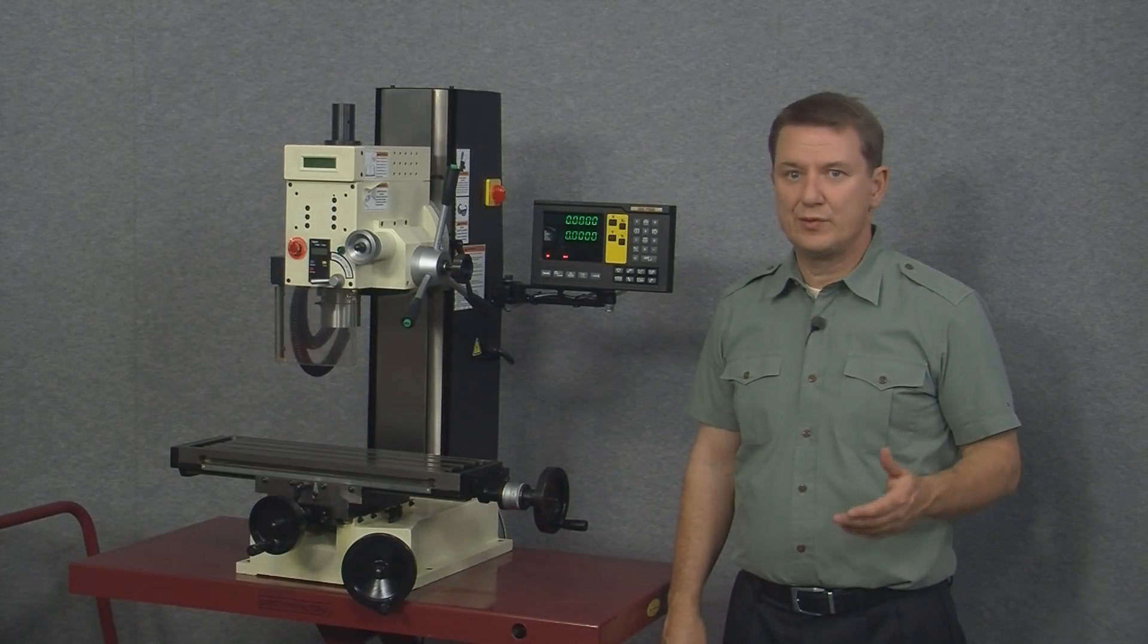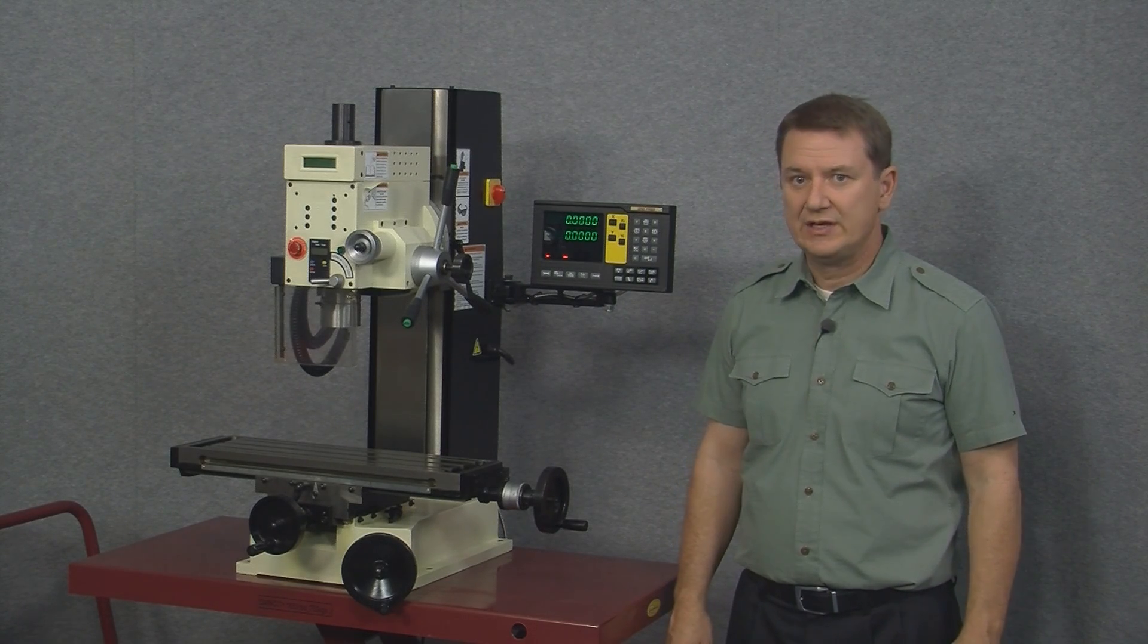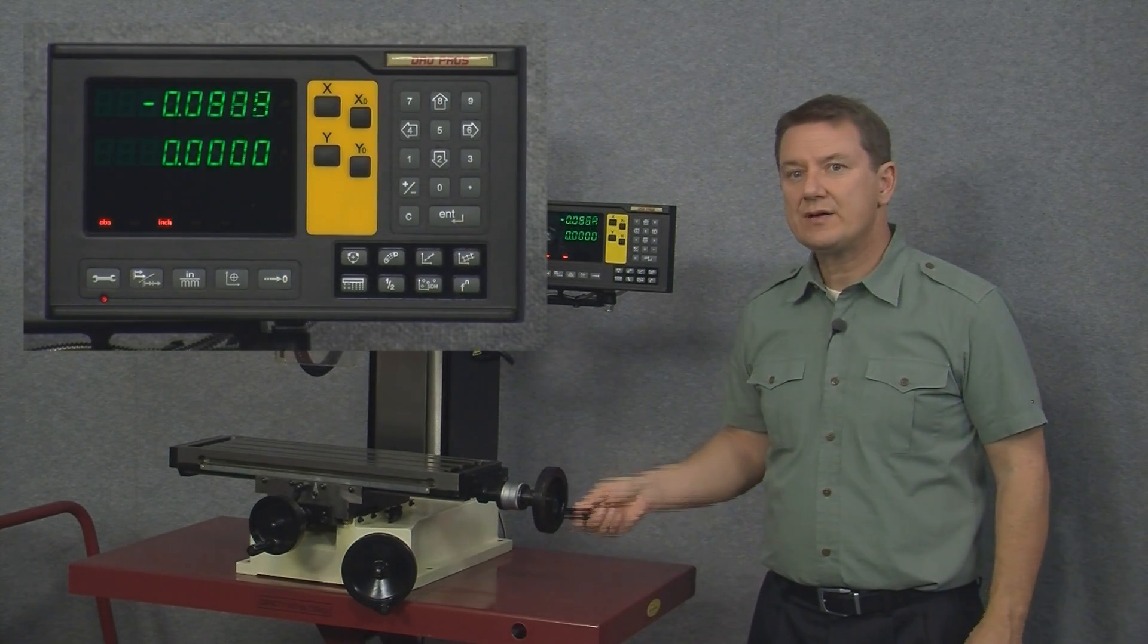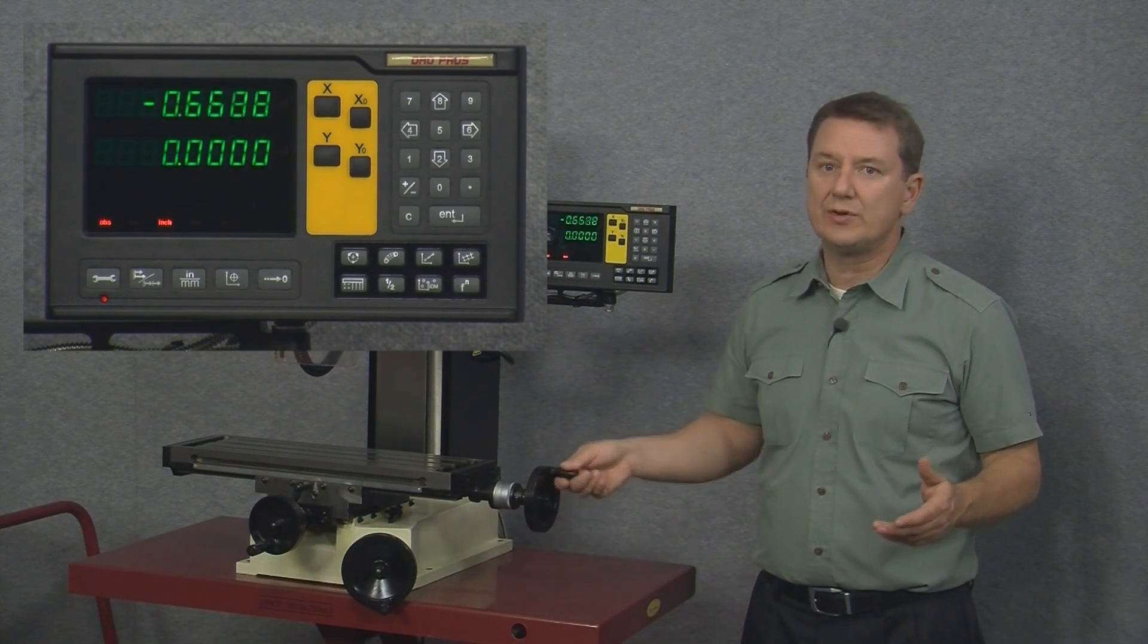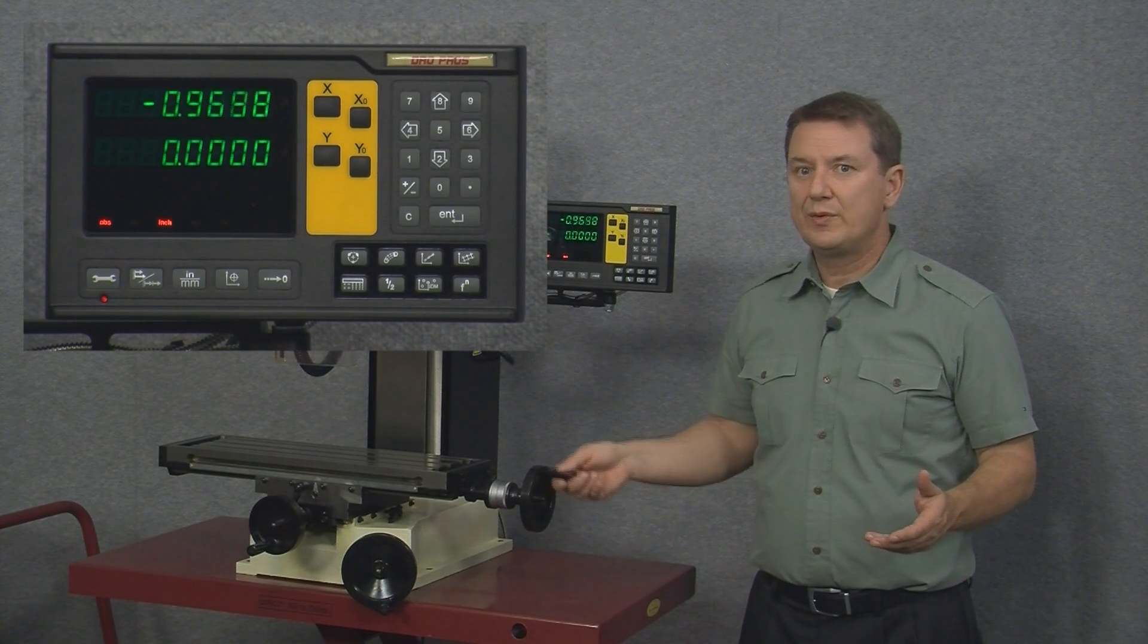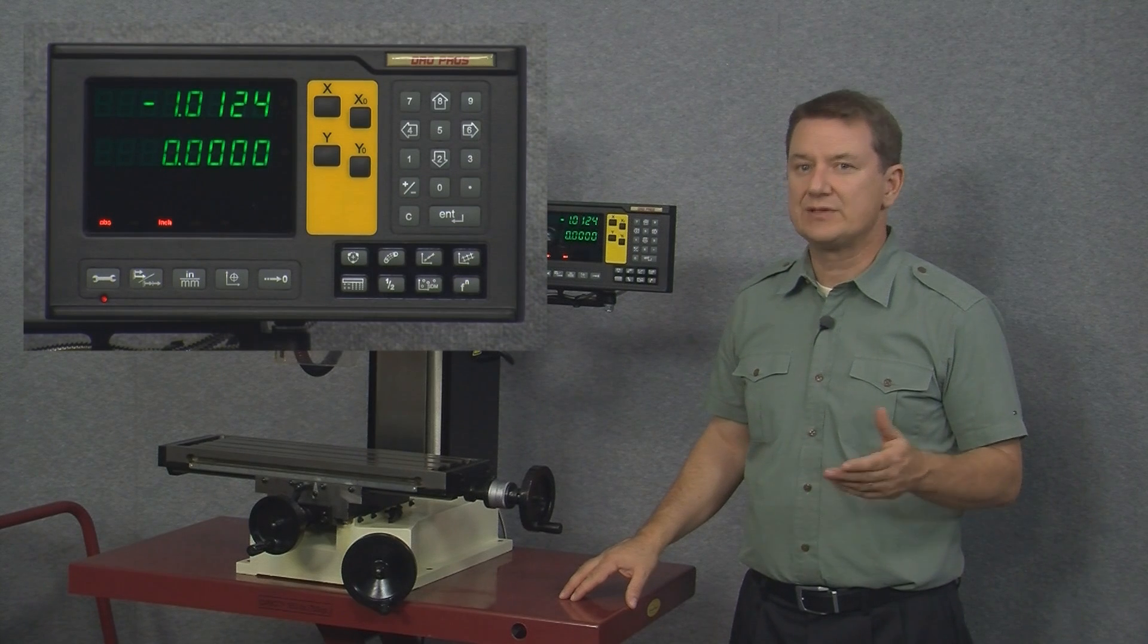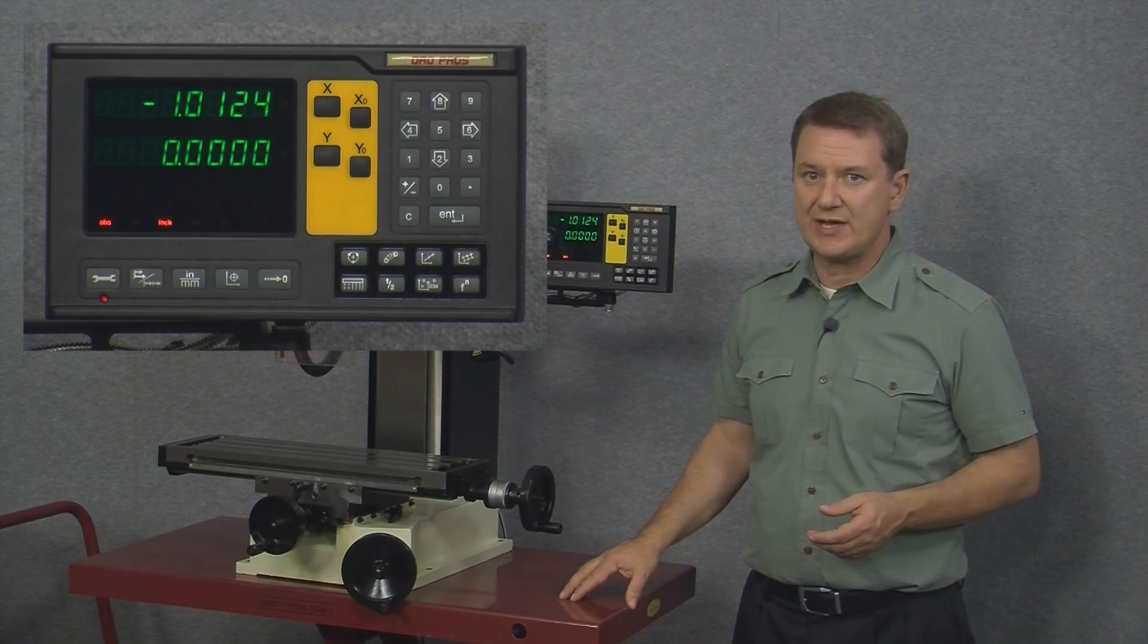Now, the next item we might need to address is how to change the scale read direction. Let's take a look at the x-axis. Notice how the x-axis is reading negative when we move the table over to the left. But we probably want the display to read positive when we move the table to the left. So let's go ahead and go into the setup mode and see exactly how to change that.